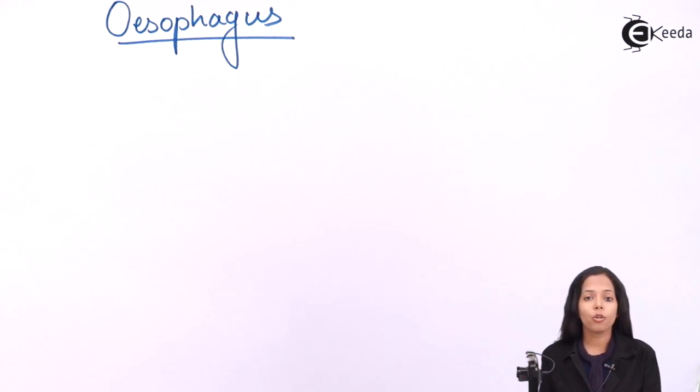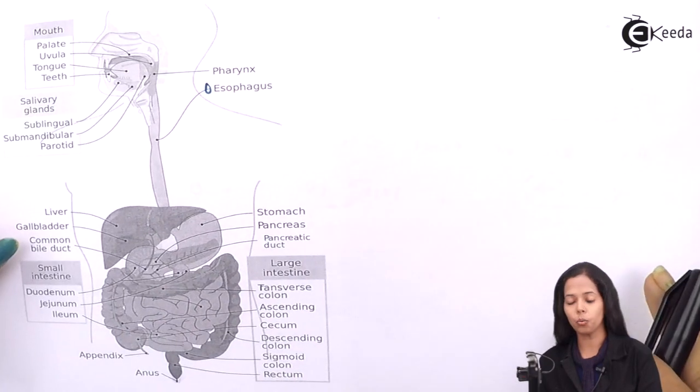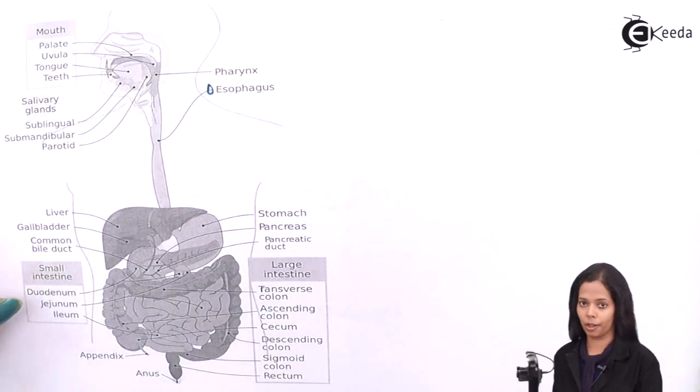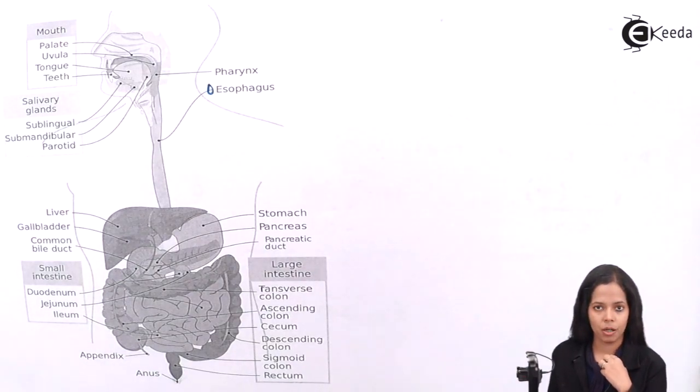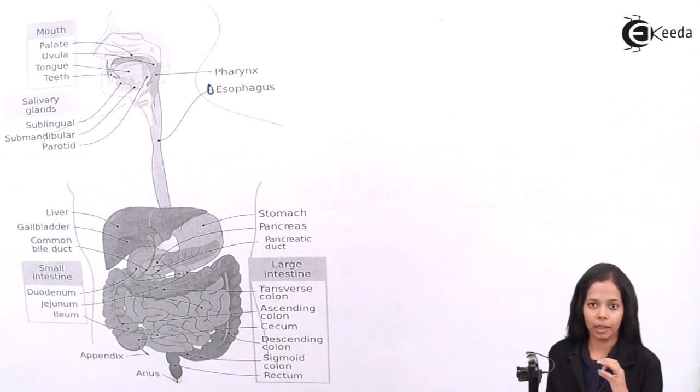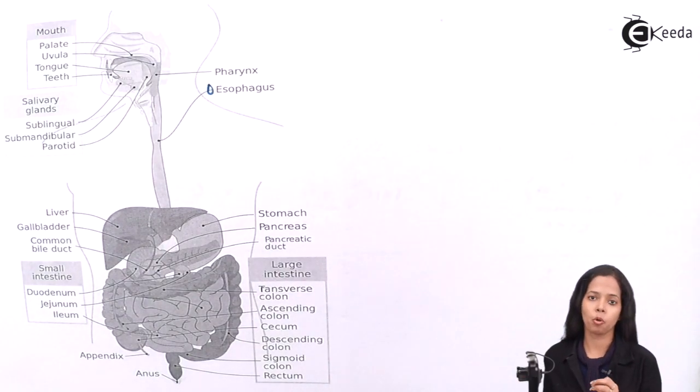Now the esophagus is divided into three regions on the basis of its location. Observe this diagram carefully. I will explain the location of esophagus. Before that, what are the three parts of esophagus? The first part is cervical, the second part is thoracic, and the end part is called abdominal.